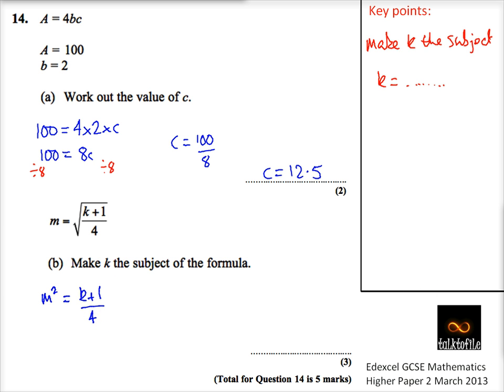So the first thing we did was we squared both sides of our equation to undo everything and left it with k. Now what we're going to do is we're going to times both sides of the equation by 4 to get rid of this divide by 4. So that gives me 4m² is equal to k plus 1.